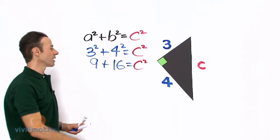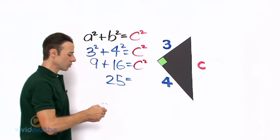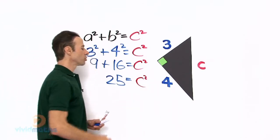Let us add the two, the 9 and the 16, and we get 25. So 25 equals the c², which is a square pronumeral.